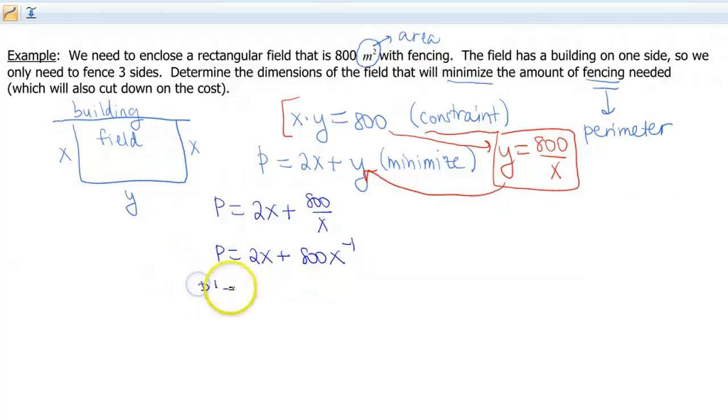So our derivative is 2 minus 800x to the negative 2. And again, this is just a power rule. So I can take this and set it equal to 0.